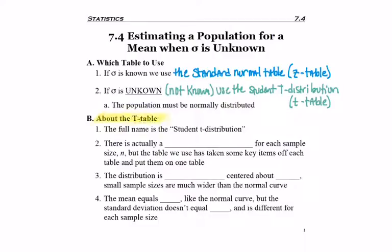So the full name is student t-distribution, because somebody published it using the name student. It turns out there is actually a different table for each sample size n. But the table we use just takes some key items off of every table and puts them onto a single table. So instead of having 60 different tables for each of 60 different sample sizes, they went and took the 90% confidence interval off all 60 tables and then just had to list 60 numbers on a single table.